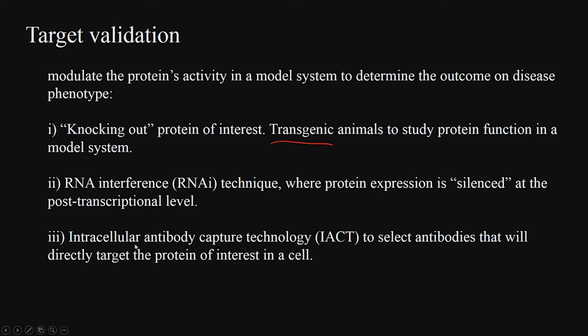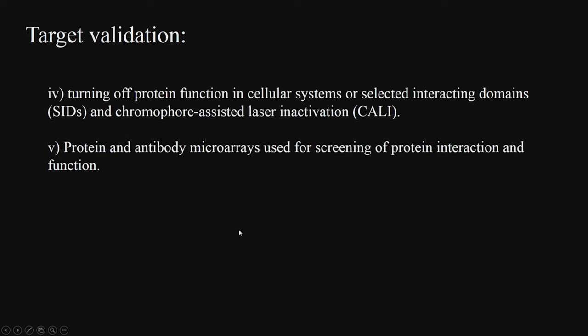Another approach is called intracellular antibody capture technology: you select antibodies that will directly target the protein. Antibodies are very selective to a particular target, so the antibody binds to the protein of interest, making it unavailable, and then you observe how the disease progresses. A fourth approach is to turn off protein function in the cellular system using chromophore-assisted laser inactivation — the protein is produced but its function is turned off. The fifth approach is protein and antibody microarray used for screening of protein interactions and function.